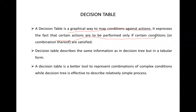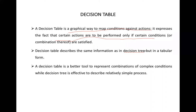The decision table describes the same information as in the decision tree, but in a tabular form. The information represented is the same; however, the representation method is different. In the decision tree we use a tree shape, whereas in the decision table we use a tabular form.